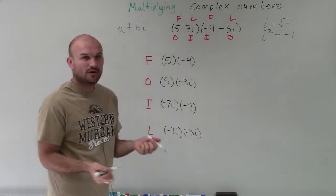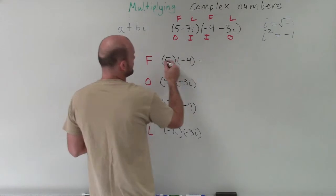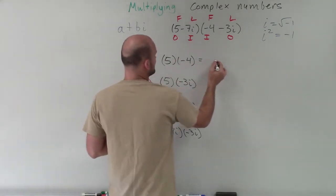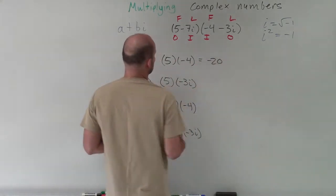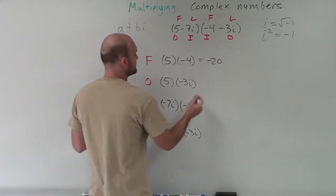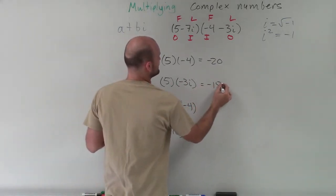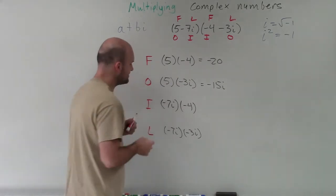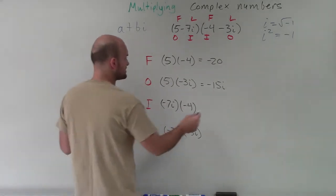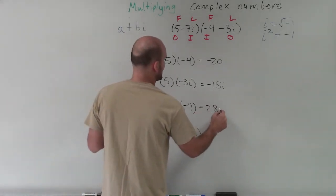All right. Then we just go ahead and see what this equals. So 5 times negative 4 is negative 20. 5 times negative 3i gives us negative 15i. Then negative 7i times negative 4 gives us positive 28i.